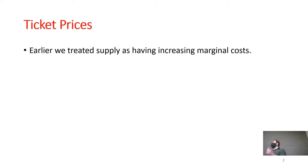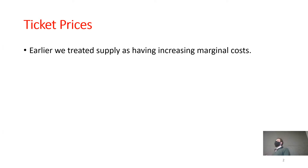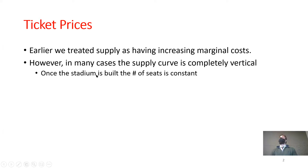Think about this room as an example. If I was selling tickets to each seat, can I increase the number of seats given my capacity constraints? No — it has the number of seats it has. Just like a stadium: they have the number of seats they have. Maybe down the road they can add more through renovations, but for the current game they're subject to however many seats they physically have. So to provide an additional seat, the marginal cost is essentially zero.